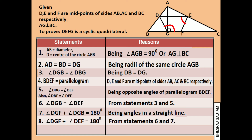Now finally, DEFG can be concluded as a cyclic quadrilateral since the sum of opposite angles of DEFG is 180 degrees, which is one of the major properties of a cyclic quadrilateral. Here we confirmed DEFG as a cyclic quadrilateral using two different properties: one, the sum of opposite angles is 180 degrees, and two, the exterior angle is equal to the opposite interior angle of a cyclic quadrilateral, as in statement 6.